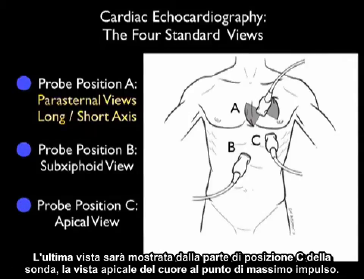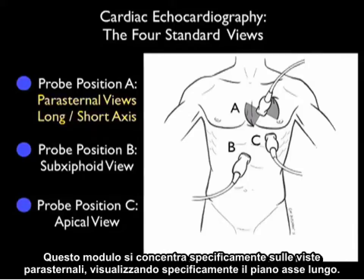The last view is going to be shown by probe position C — the apical view of the heart at the point of maximal impulse. This module will specifically focus on the parasternal views, specifically looking at the long axis plane.